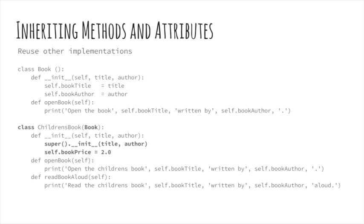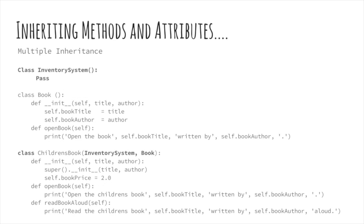Python supports multiple inheritance. In this set of extensions to the scenario, I've modified the children's book to have two parents: inventory system and book. Inventory system is simply a placeholder that I hope to replace in the future with a full-function inventory system that the children's book implementation can take advantage of.